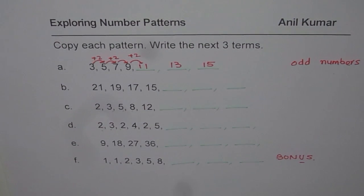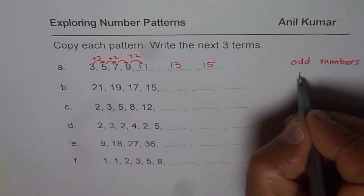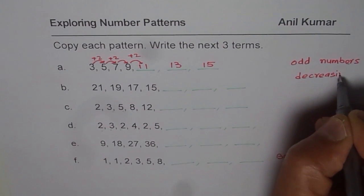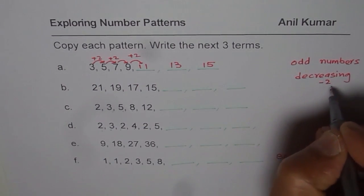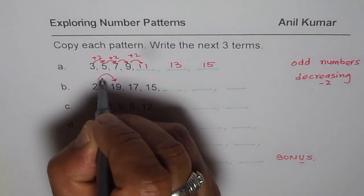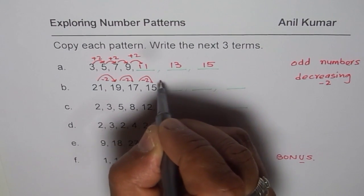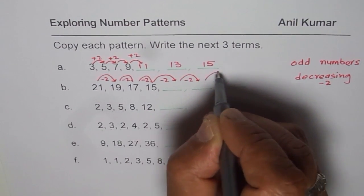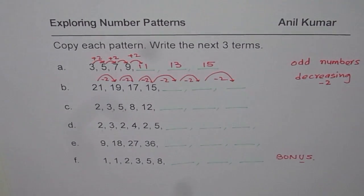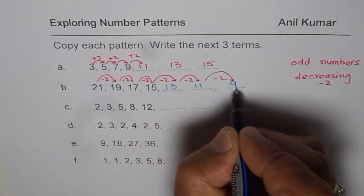Now let's look into part B. 21, 19, 17, 15. Well, what we need to see is it is decreasing, correct? It is a decreasing pattern. And it is decreasing by how much? It is decreasing by 2. So it is minus 2. So as you move towards the right, you do minus 2, correct? You do minus 2 to get to the next term. So to get here, we have to do minus 2. Again, we have to do minus 2. And then again take away 2 to get the next term. So let us take away 2 each time. So 15 take away 2 is 13. 13 take away 2 is 11. 11 take away 2 is 9.